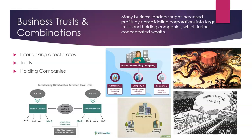Financier J.P. Morgan created what's called a holding company as another type of business consolidation. This was a company that held many different companies inside of it, and they worked in tandem so that all of the business actions within each company were actually working for the greater good of the holding company. Of course, all of these were detrimental to the consumer and beneficial to the pockets of the corporations.